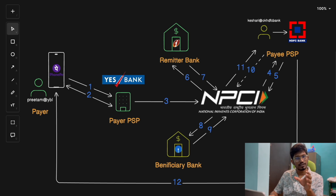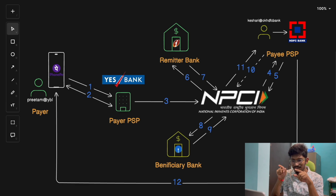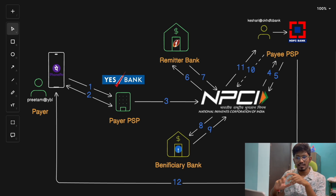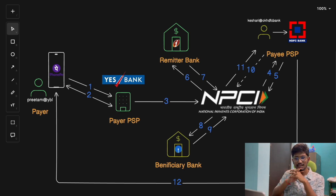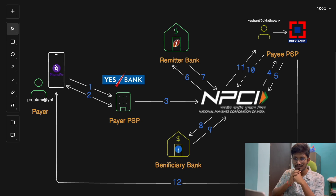Security is a huge concern in any financial system. UPI uses multiple layers of security including two-factor authentication. When you are making a payment, your mobile device is the first layer of authentication, and your UPI PIN serves as the second. NPCI acts as the central system to ensure the transaction flows securely and seamlessly between all parties — it is truly the core or heart of the entire UPI architecture.